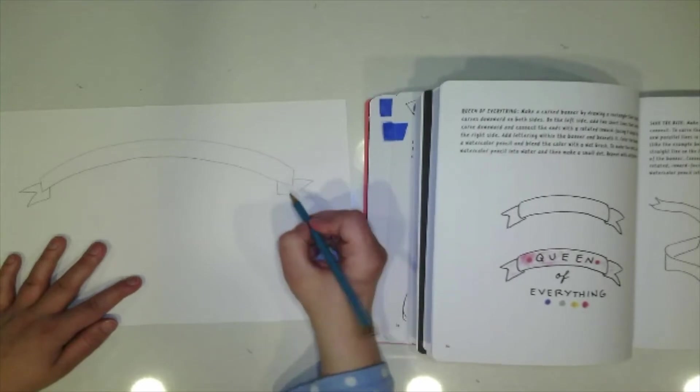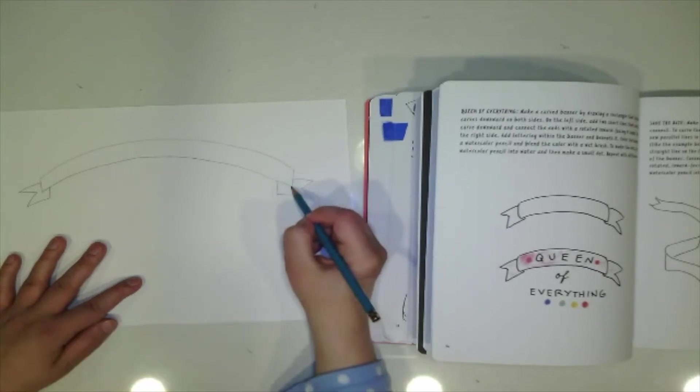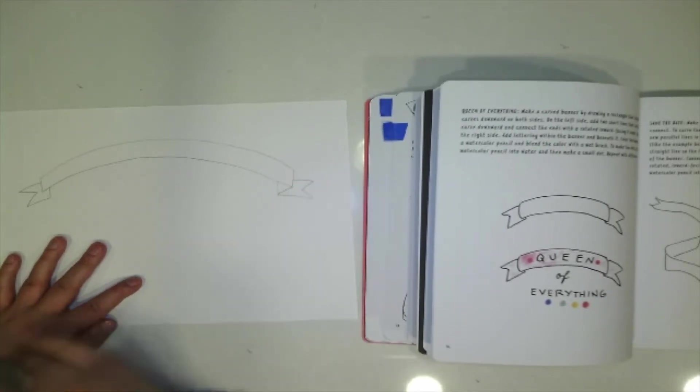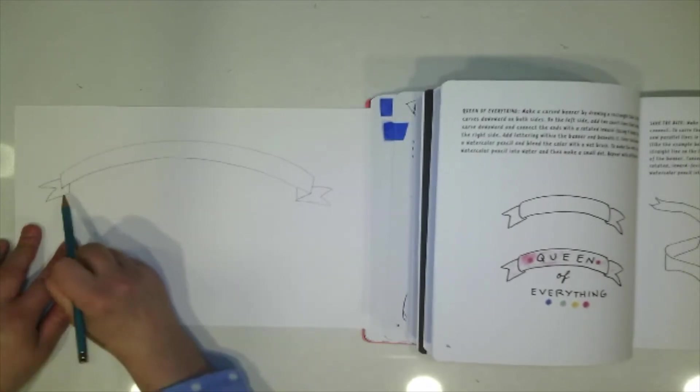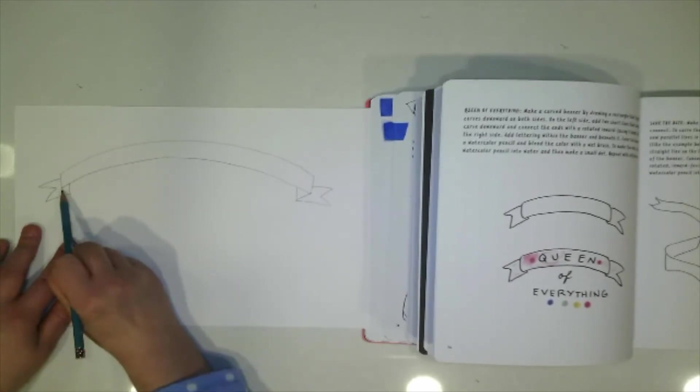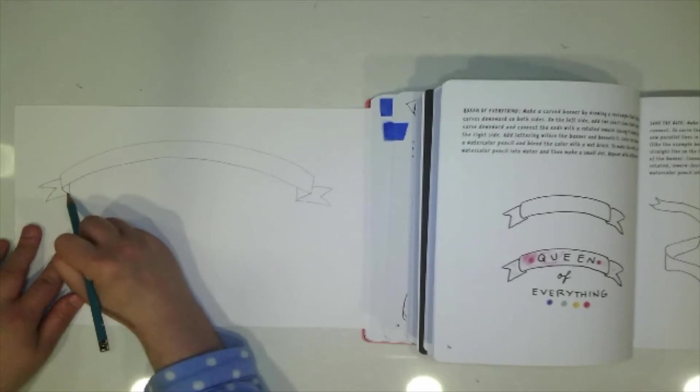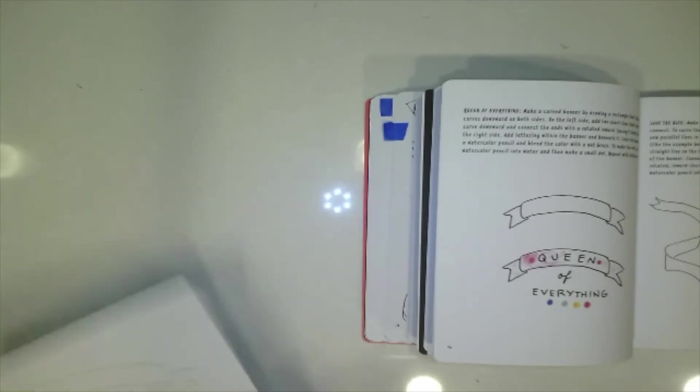Last little part to make it look more realistic is I am going to go from this point on an angle to the other point. So I am drawing from this point that corner to this point and I am going to draw a straight line. There you go.